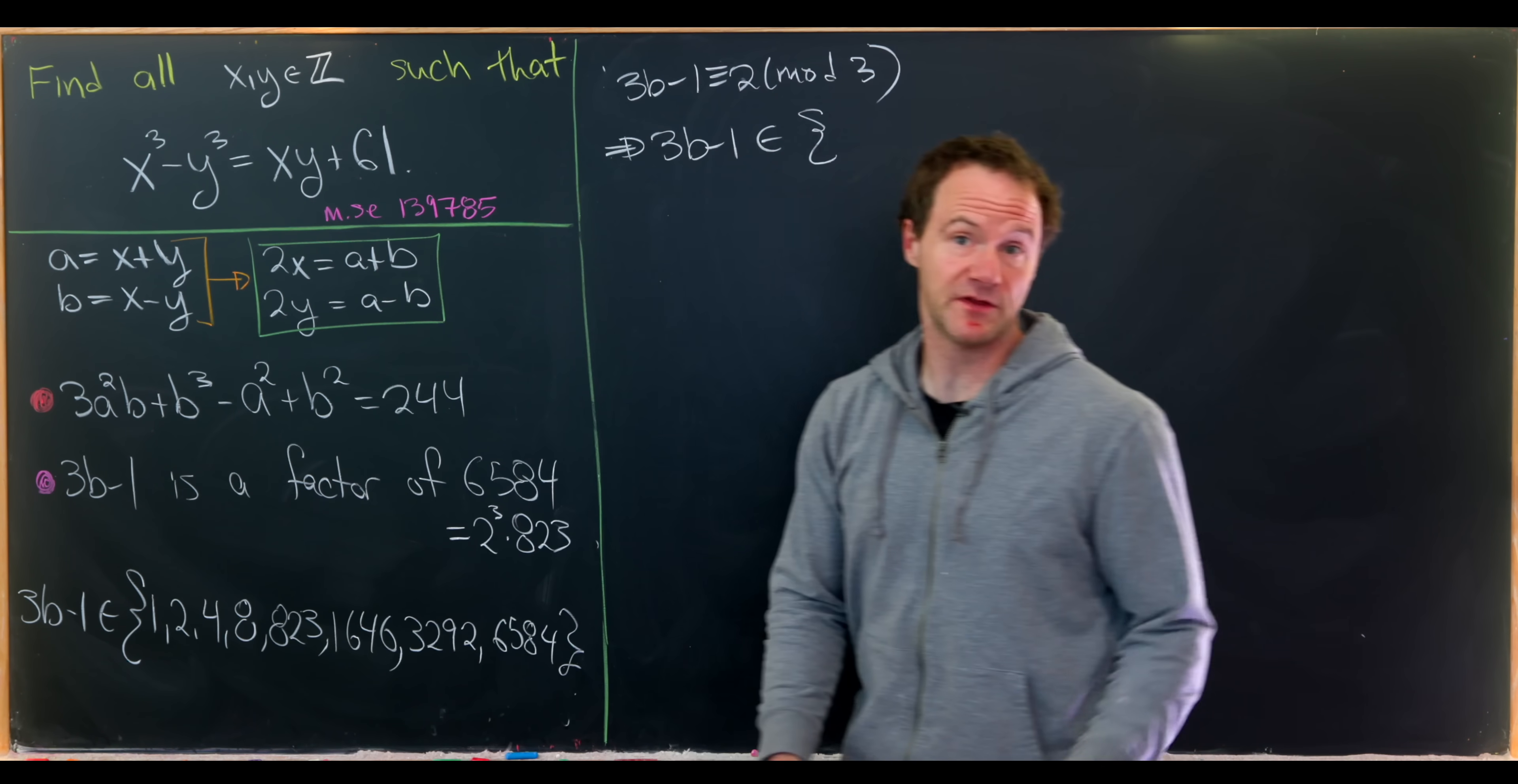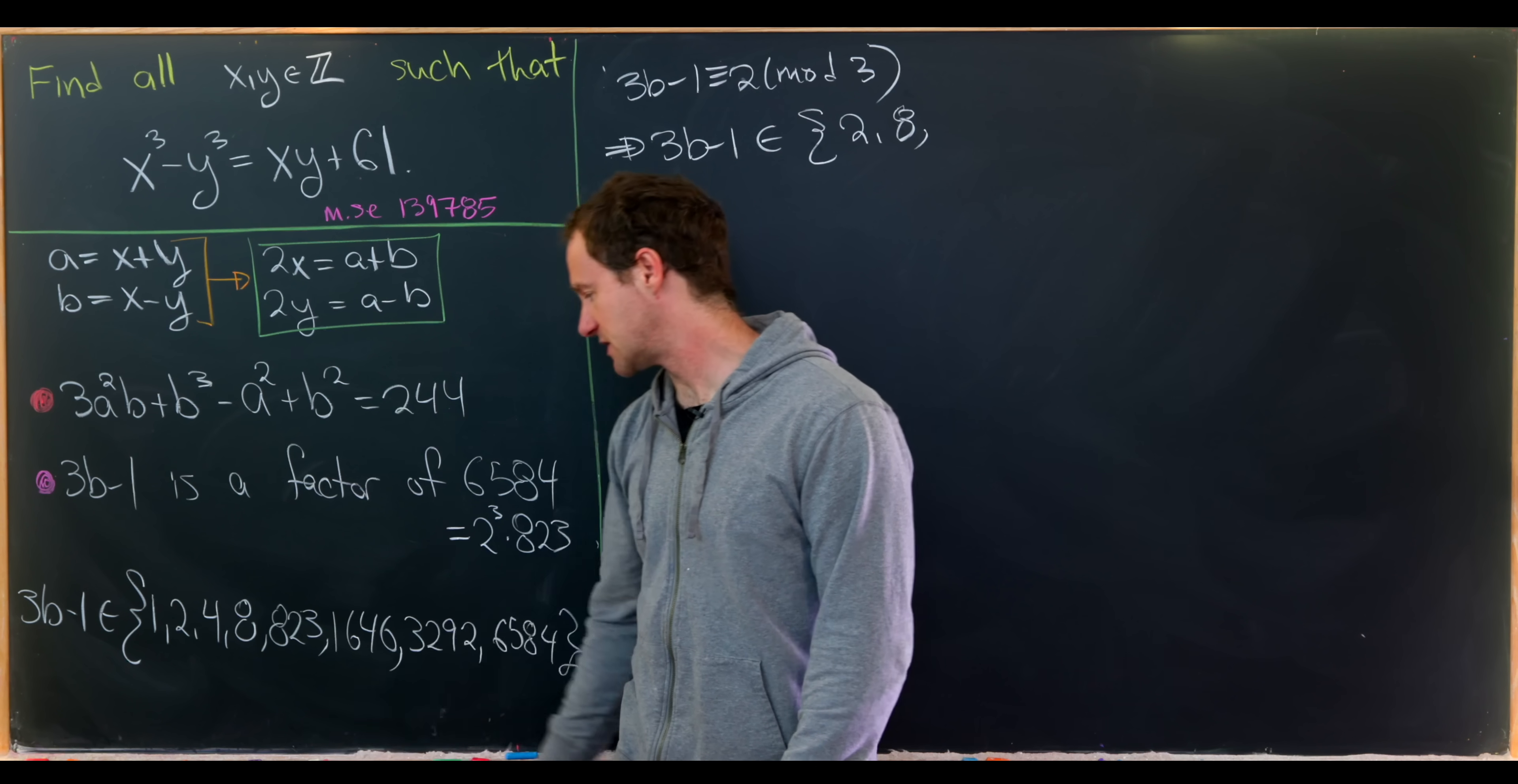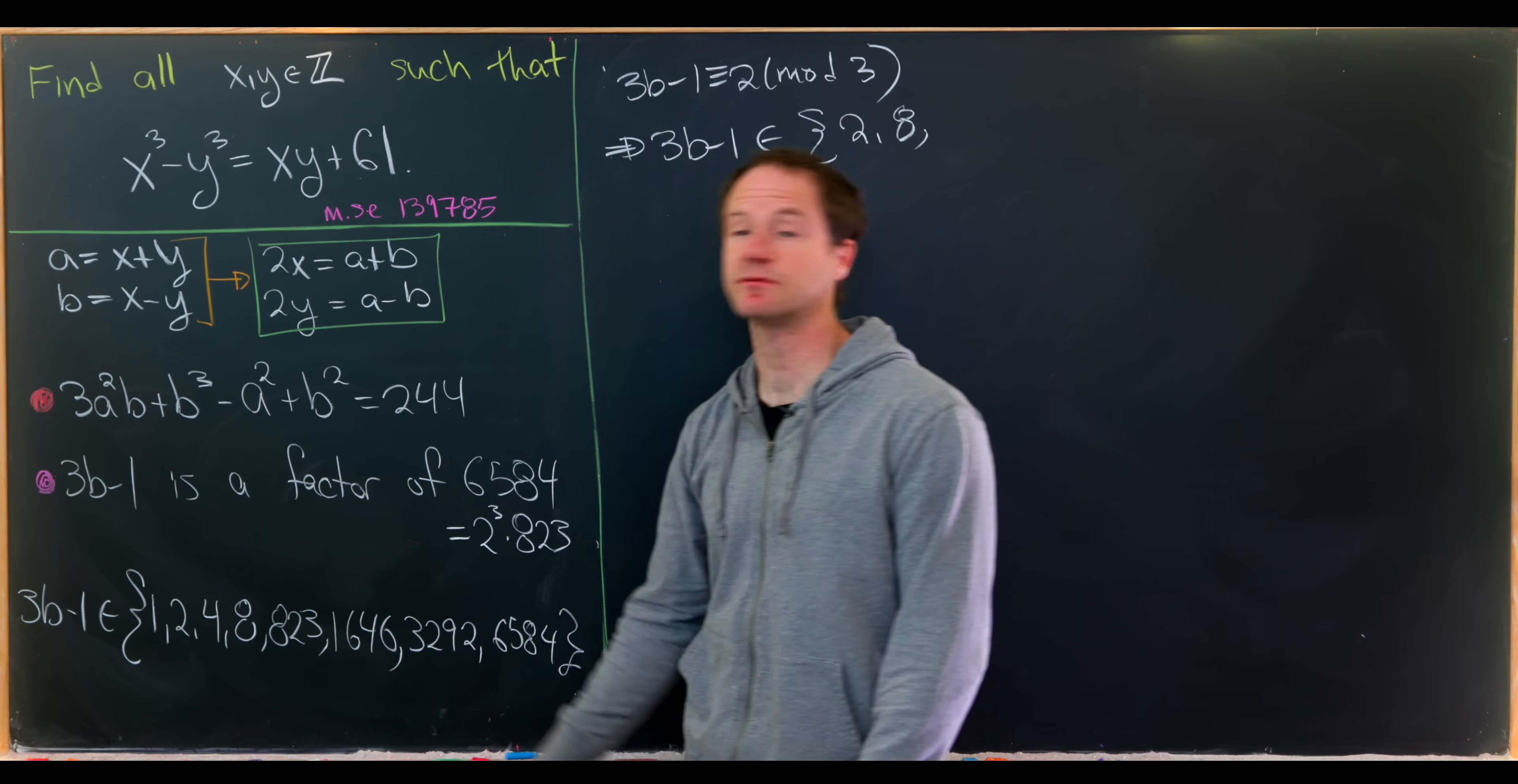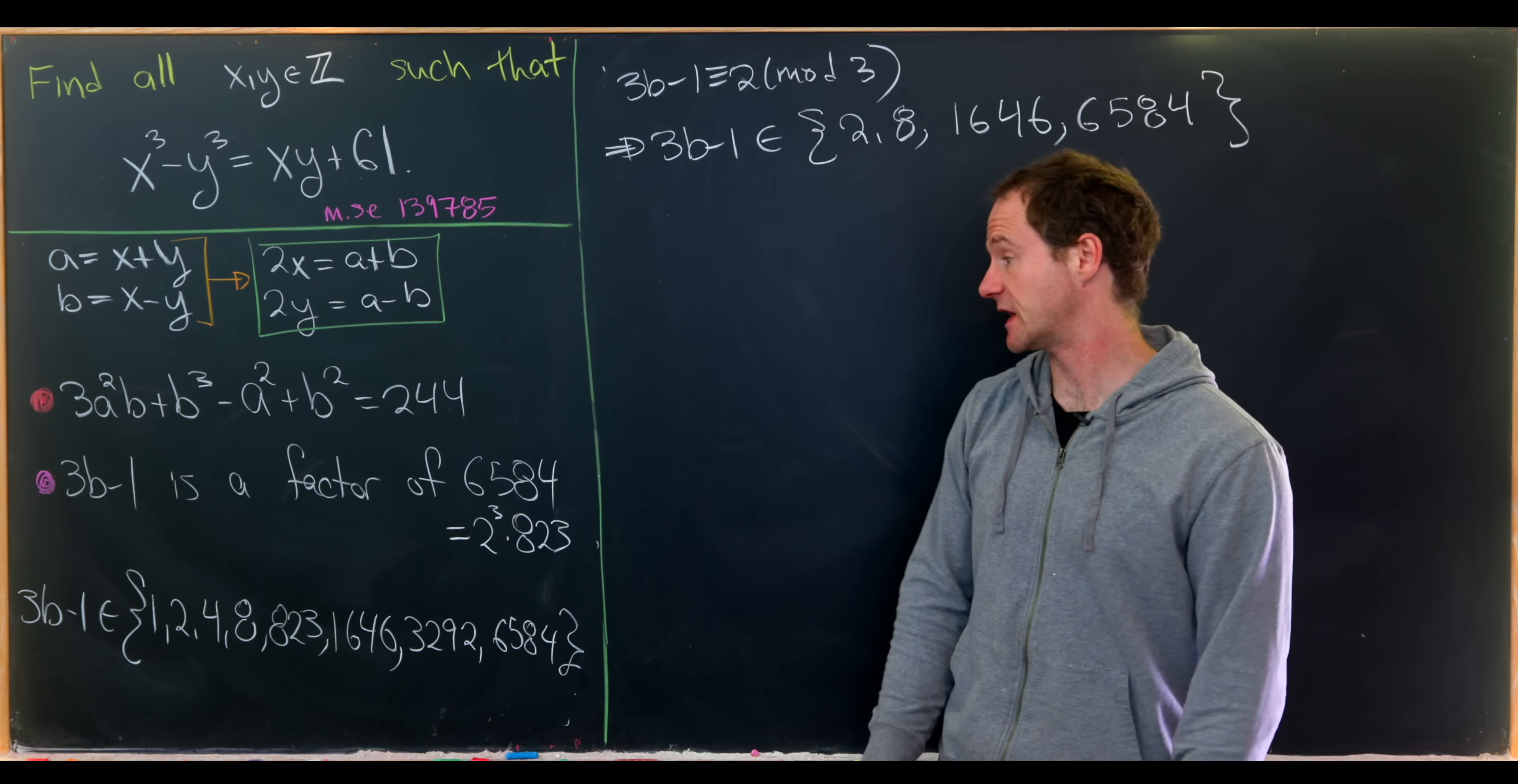But 2 has a remainder of 2 when dividing by 3. 4 does not because 4 has a remainder of 1. 8 works because it's 2 more than 6. 823 does not work - 8 plus 2 is 10 plus 3 is 13, that's 1 more than 12. 1646 does work - 6 plus 4 is 10 plus 6 is 16 plus 1 is 17, that's 2 more than 15. And the last number 6584 is also okay. But this one in the middle is not 2 more than a multiple of 3. From here we'll do these one case at a time.